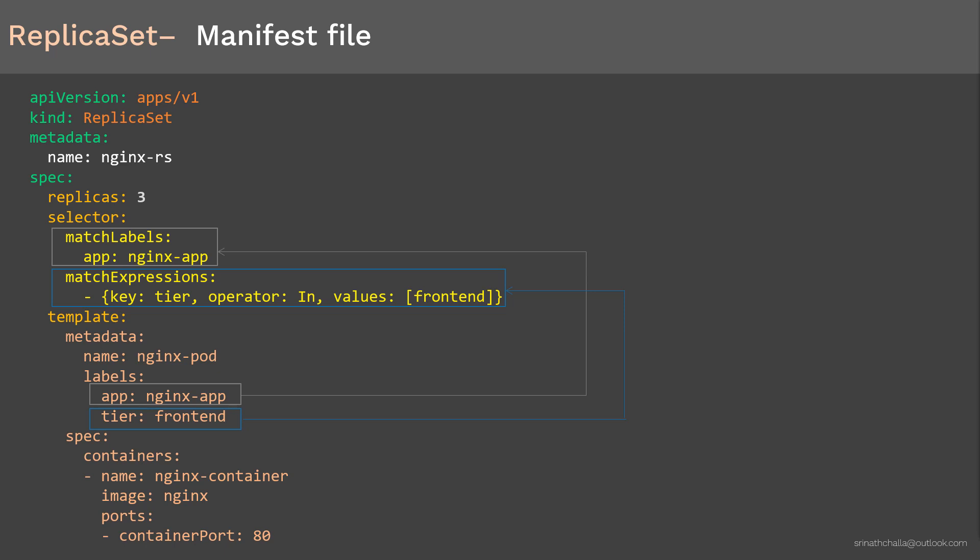In this example, since we have just one value 'frontend', we can use matchLabels instead of matchExpressions. To summarize the manifest: we have apiVersion, kind, metadata, and spec. Under spec, we define the number of replicas, the pod configuration, and the selector. The major difference between ReplicaSet and ReplicationController is in the selector section. Now let's go ahead and create this ReplicaSet.